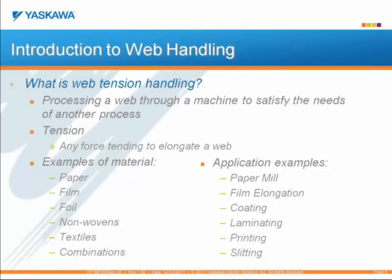What is web tension handling? The easiest definition is processing a web through a machine to satisfy the needs of another process, increasing productivity and efficiency. Tension can be defined as any force tending to elongate a web. For example, in coding or printing machines, depending on the thickness of applied material specified by the customer, we move the web at a certain speed to apply this material. As in every system there are limitations. A web can be any long, thin, and flexible material and is usually made out of paper, foil, nonwoven film, textiles, or some combinations of these.